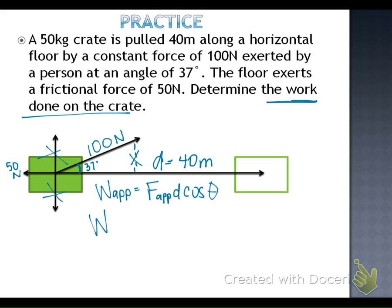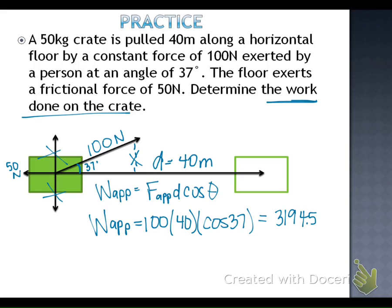We find the work done by the applied force by taking 100 newtons times 40 meters times cosine of 37 degrees, which gives us 3,194.5 joules.